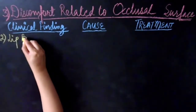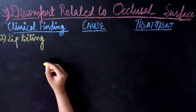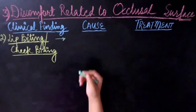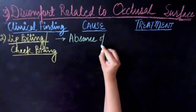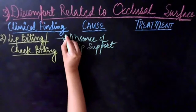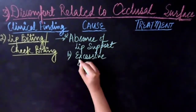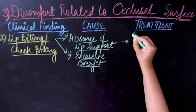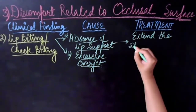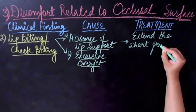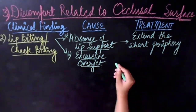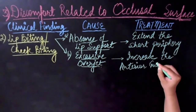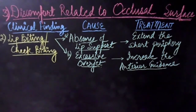Another common complaint related to the occlusal surface is lip biting. It generally occurs due to the absence of lip support — that is, the denture base material does not provide enough support — or there may be excessive anterior horizontal overlap, meaning excessive overjet. If there is absence of lip support, we need to extend the short periphery of the denture. If there is excessive overjet, it can be corrected by grinding the lower incisors to provide more incisal guide angle, thereby increasing anterior guidance.